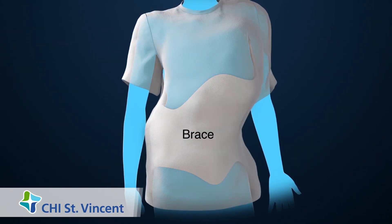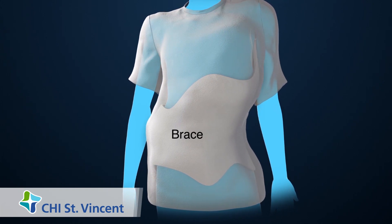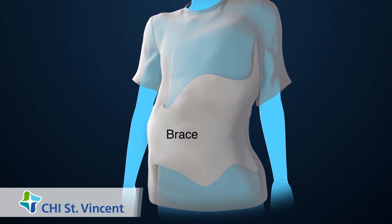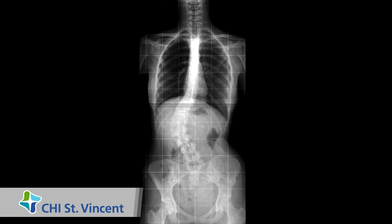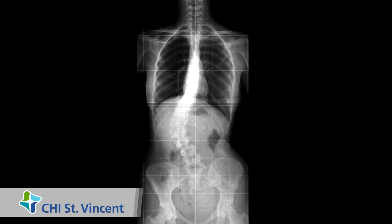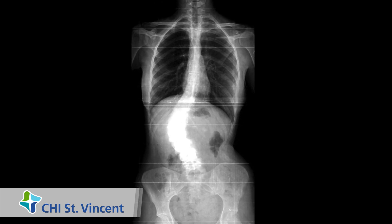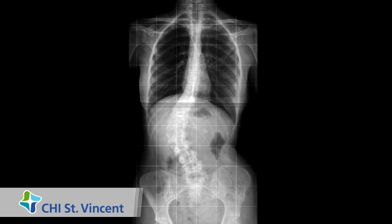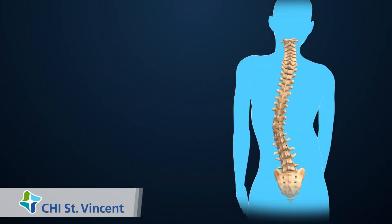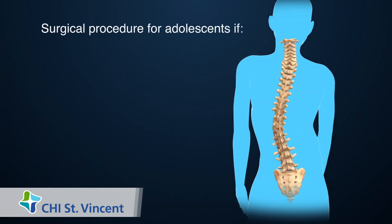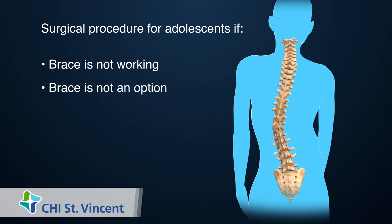Scoliosis is often treated with a brace to stop the curve from getting worse. Doctors will measure the spinal curve over time to see if the brace is working. For an adolescent, a surgical procedure may be necessary if the brace isn't working, or if a brace is not an option.